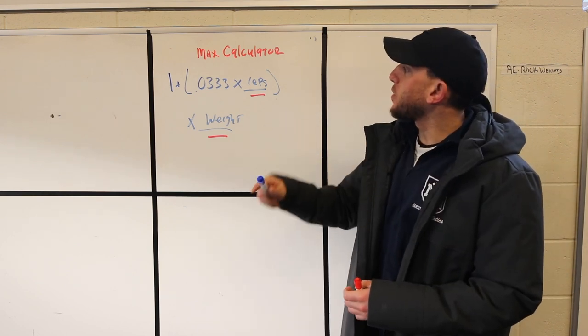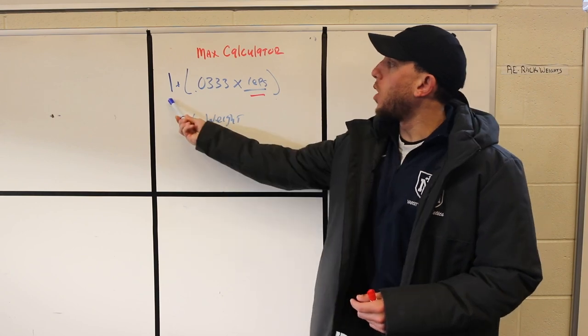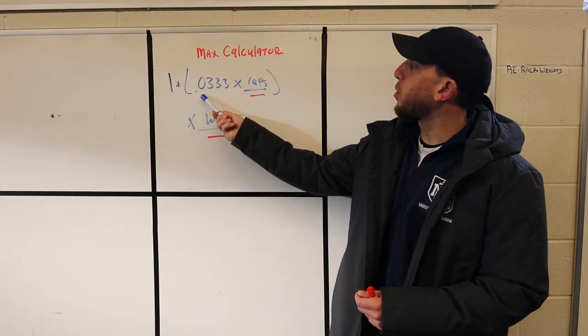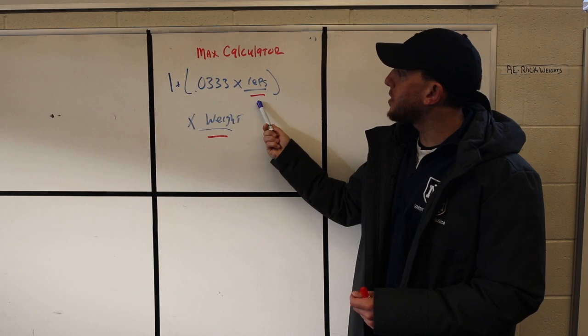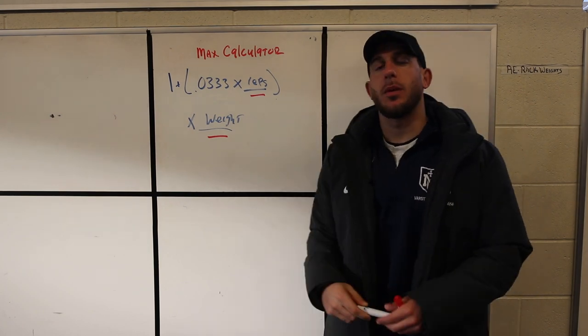The equation is: (1 + 0.0333 × reps) × weight.